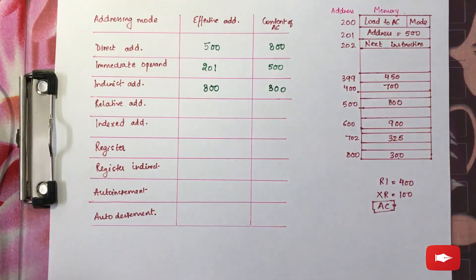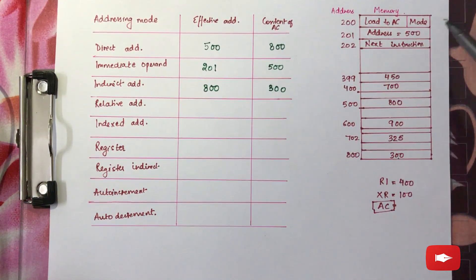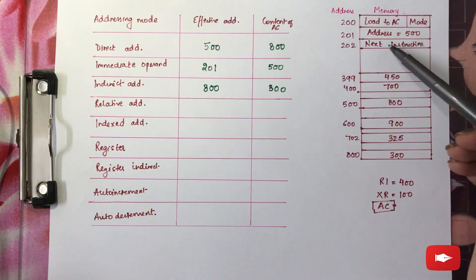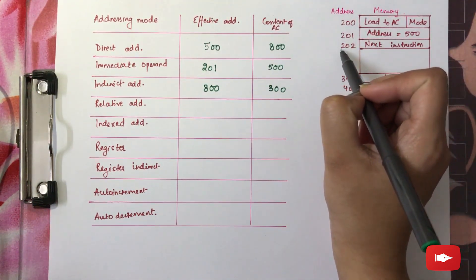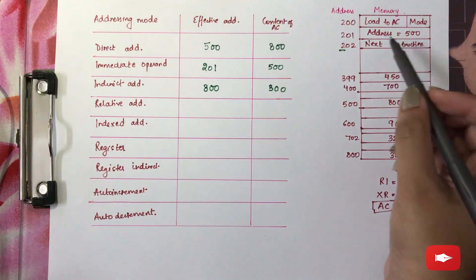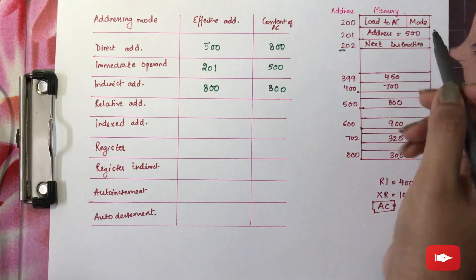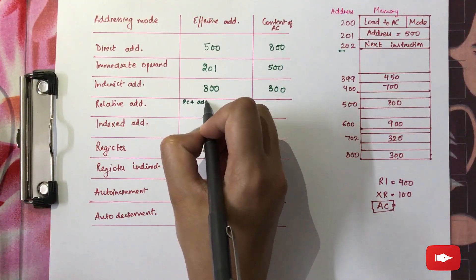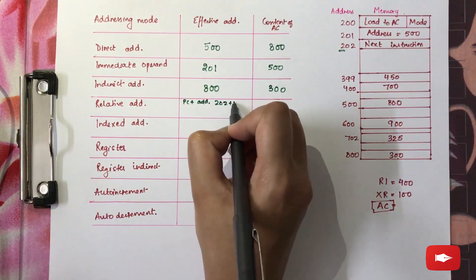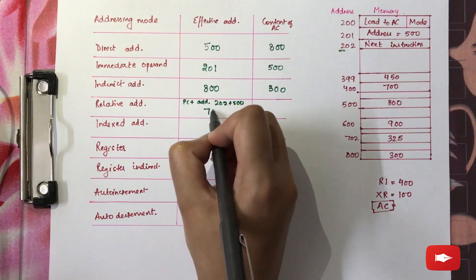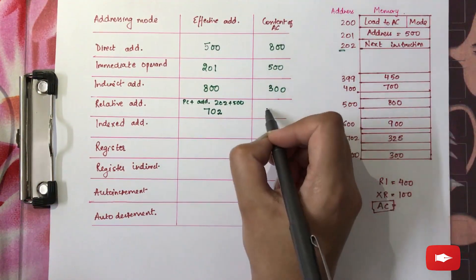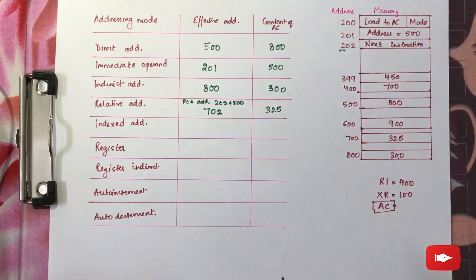Next is relative addressing mode. In relative addressing mode, the value of PC is added to the address part. In this case, because the next instruction is specified at 202, the value of PC will be taken as 202 and the address part is 500. Therefore, PC plus address part — 202 plus 500 — gives you 702, and the value specified at 702 is 325. Hence, that will be your operand.